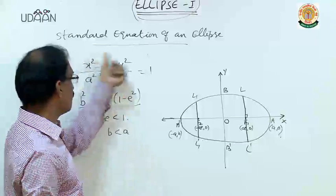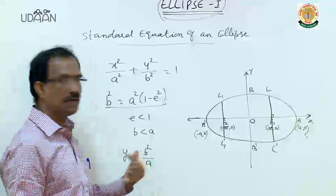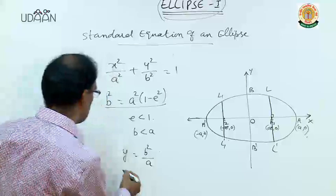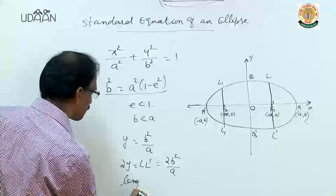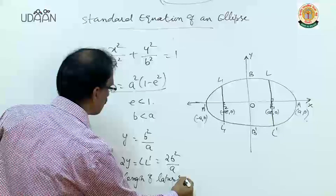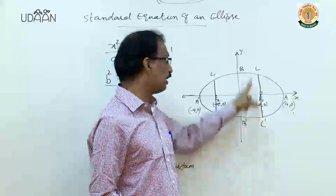If we substitute x = ae into the ellipse equation, we get y = b²/a. So the half-length is b²/a, and the full length LL' equals 2b²/a. This is the length of the latus rectum. A line passing through the focus perpendicular to the axis is called the latus rectum.